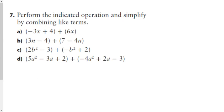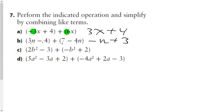Question 7: perform the indicated operation by combining like terms. Combining your x's first gives 3x; your plus 4 stands alone as a constant. For the next one, 3n and negative 4n make negative 1n, written as negative n. A negative 4 and a positive 7 make a positive 3, so the answer is negative n plus 3.